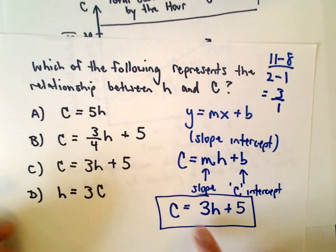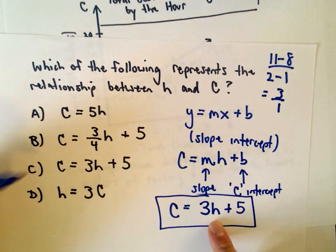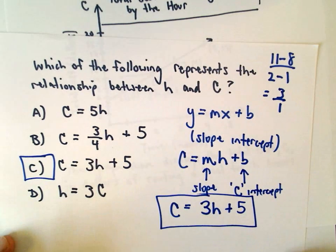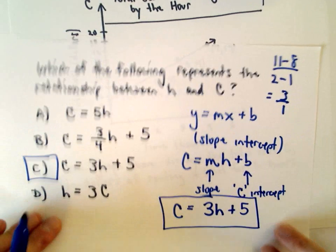So the formula here would be C equals 3H plus 5, which would also be answer choice C.